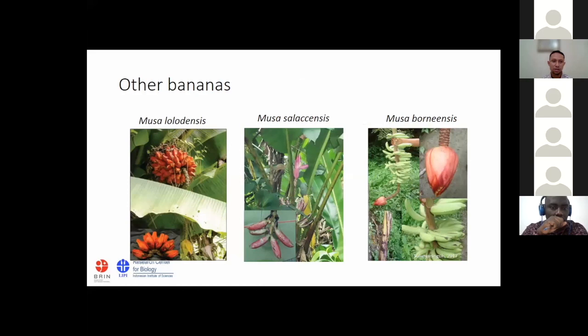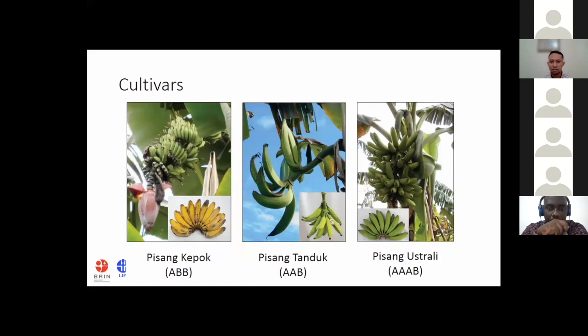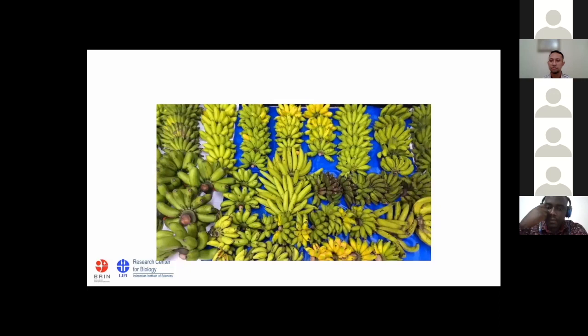Other banana species also found in Indonesia include Musa lalodensis in the eastern part, Musa salakensis in the western part, and from Borneo there is Musa burneensis. Cultivars are many more — Pisang Ambon is one of the most favorite banana fruits in Indonesia, and also in Malaysia and Southeast Asia. You also find Pisang Raja, Pisang Mas, Poh Tanduk, and tetraploid Pisang Australian — hundreds of cultivars in Indonesia.